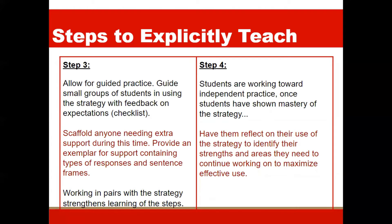Guided practice also requires feedback as students practice to help them implement with fidelity. In step four of the process, as students work toward independence, use criteria established in your planning to evaluate who is ready to work independently and who is showing evidence of mastery learning. Students should continue to reflect on their work — identifying their strengths and areas to keep focusing on. This is also a time to clear up any major confusions with a mini lesson.